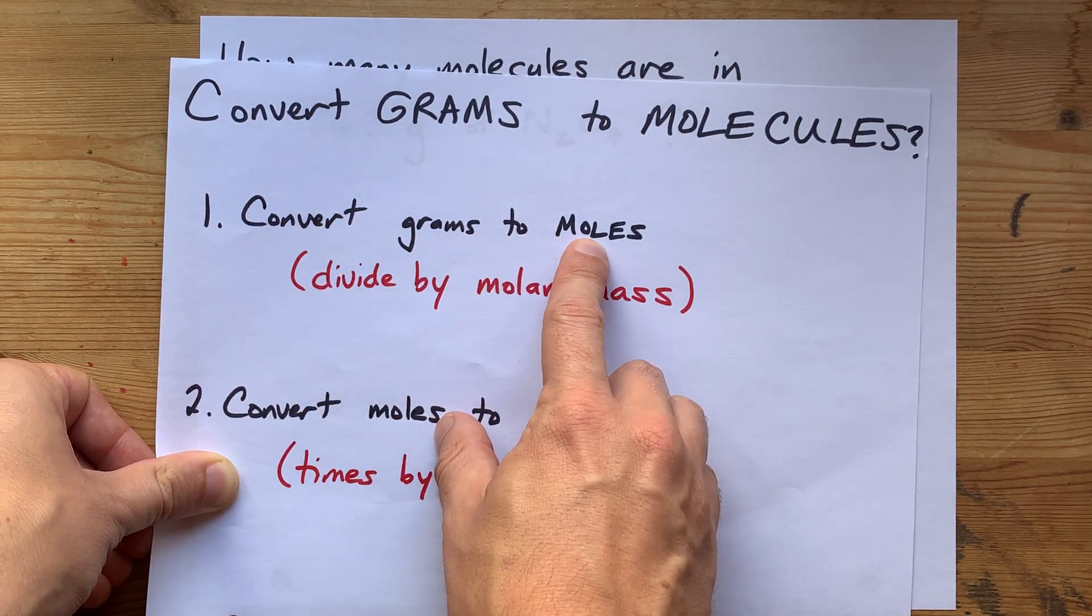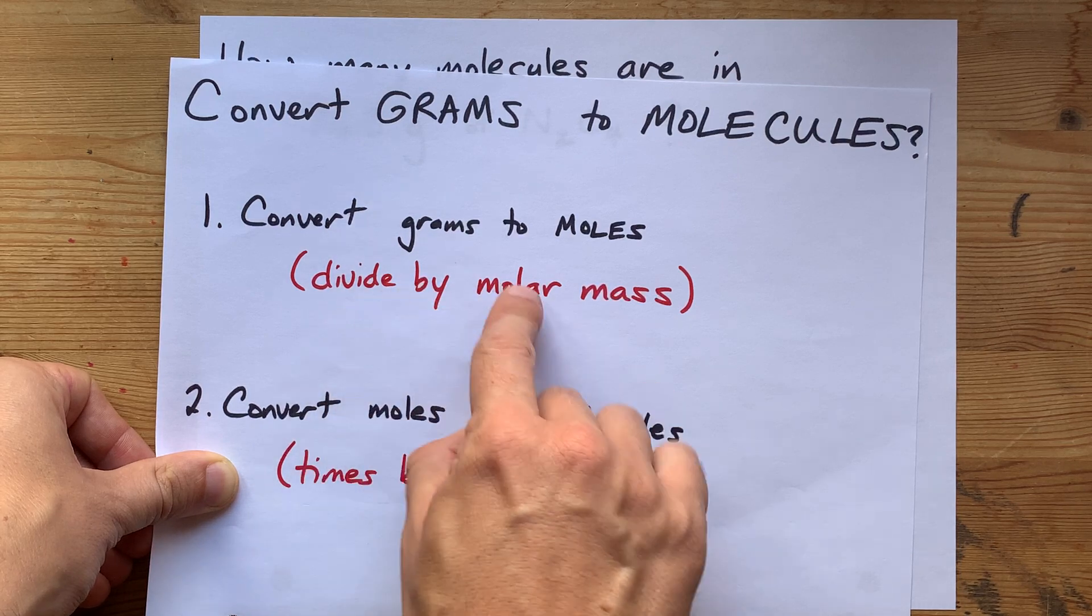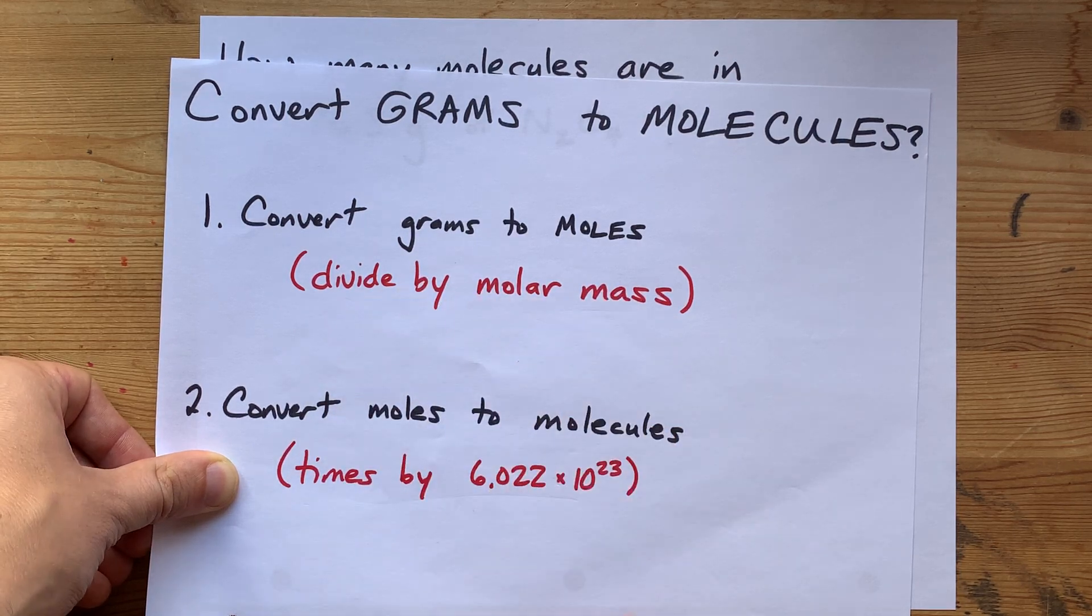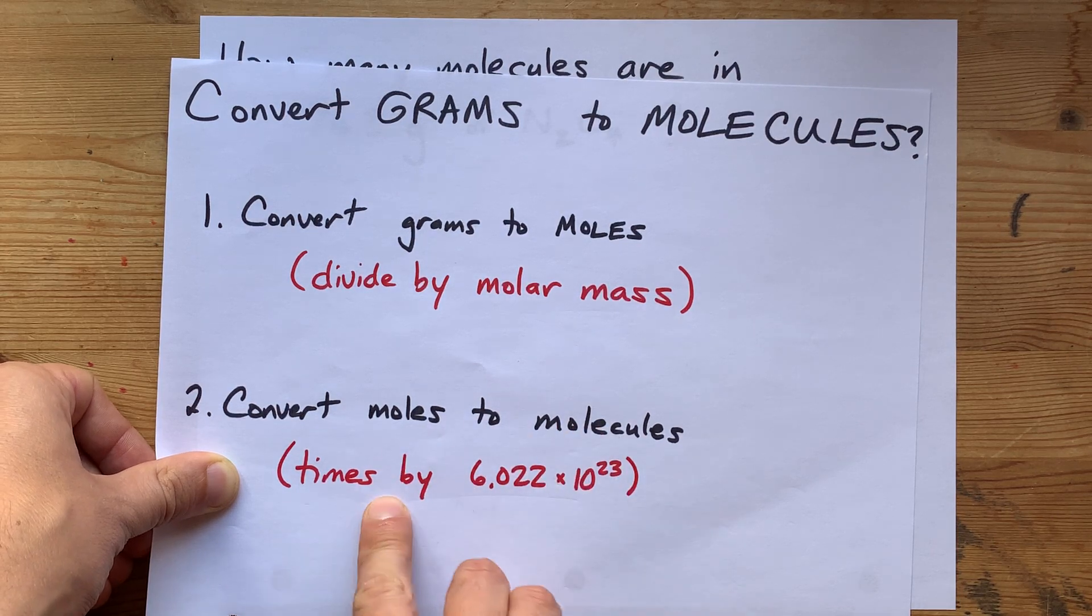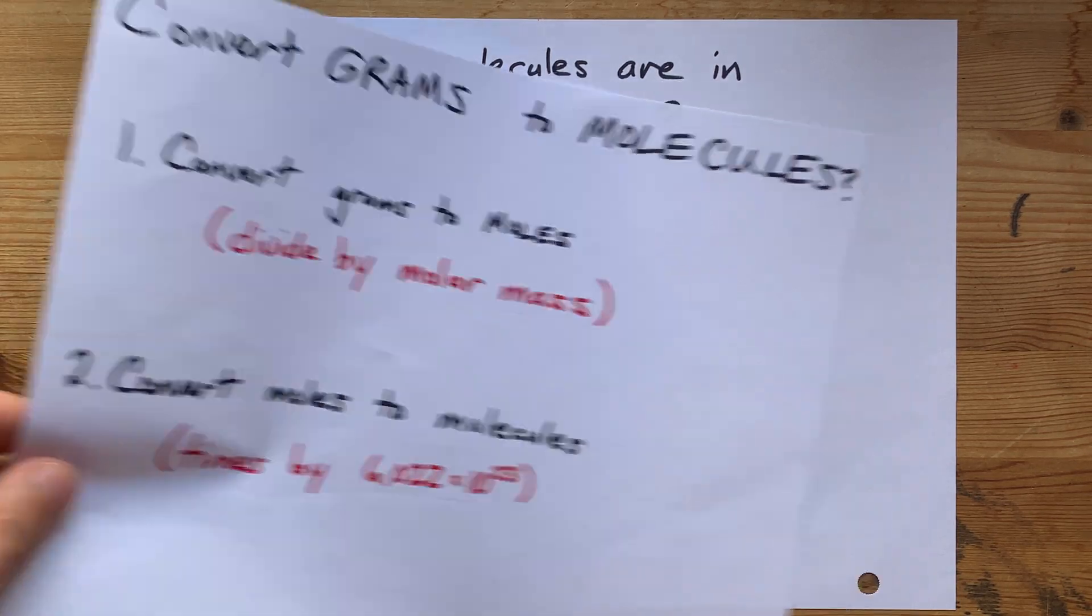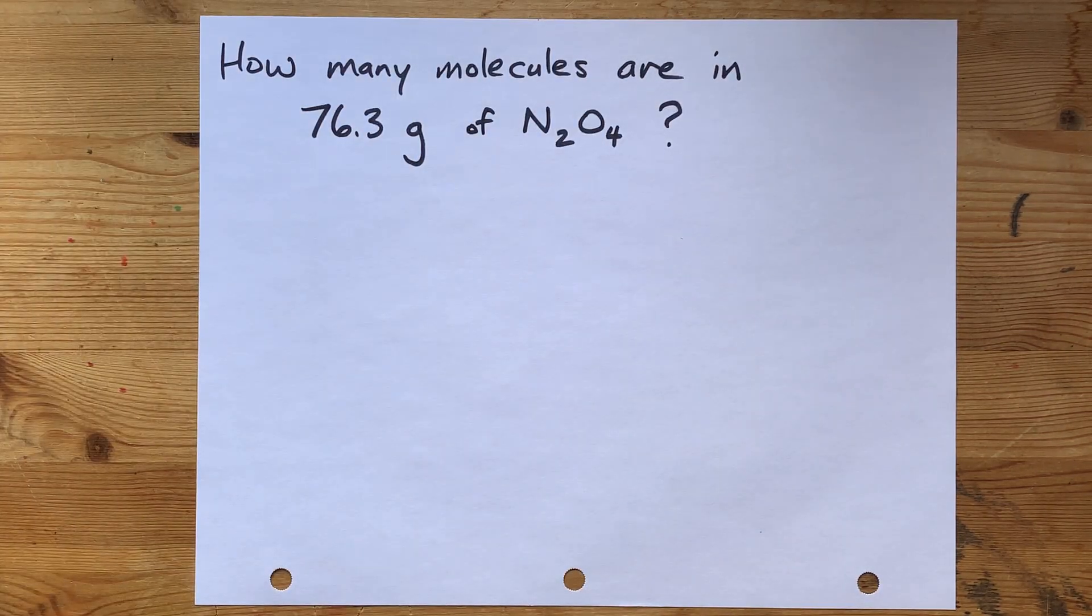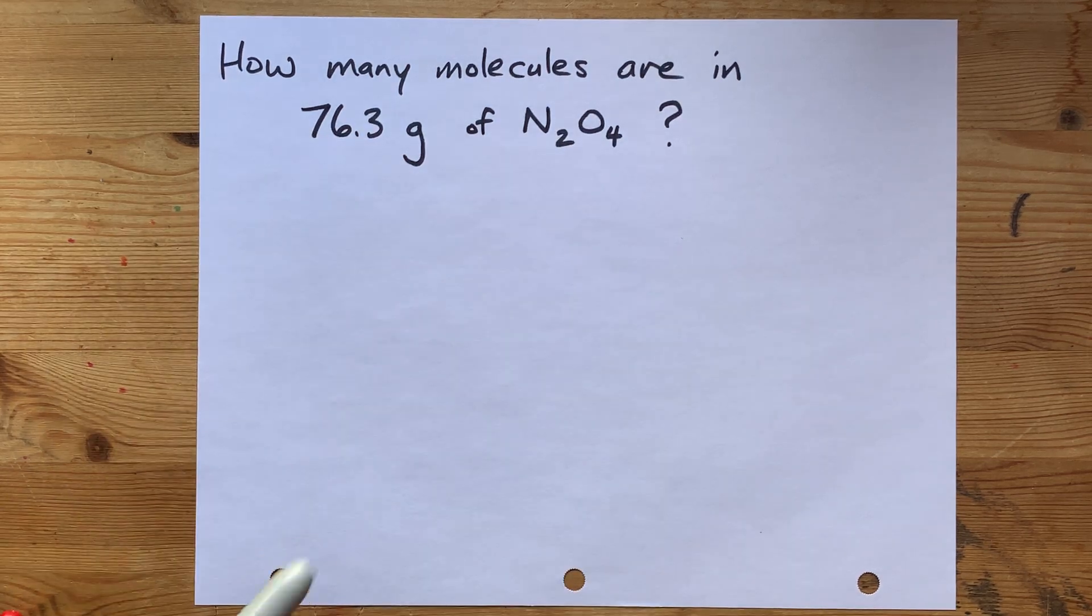How do you convert grams to moles? Divide by the molar mass of the molecule you're asked about. And how do you convert moles to molecules? You times it by Avogadro's number. Now, there are formulas for all of that, but let's go through the example together.